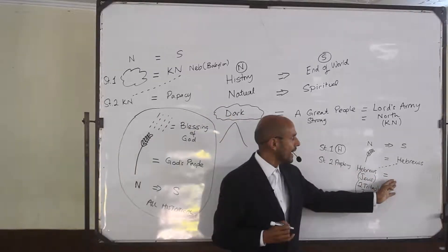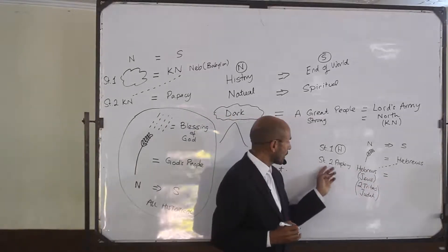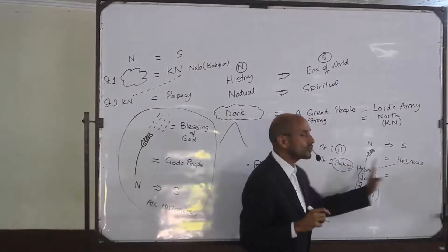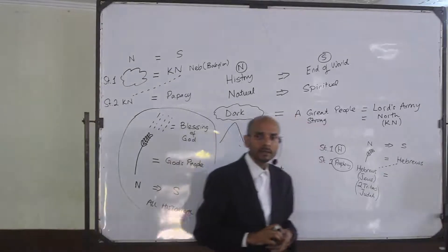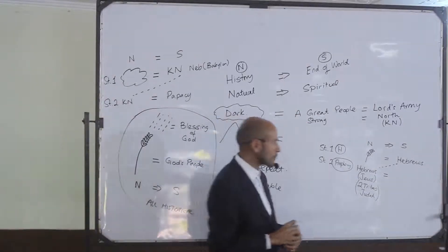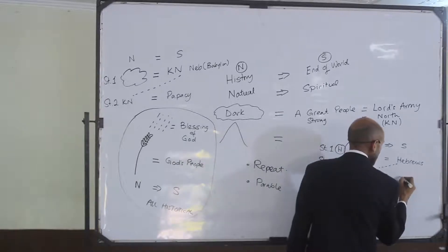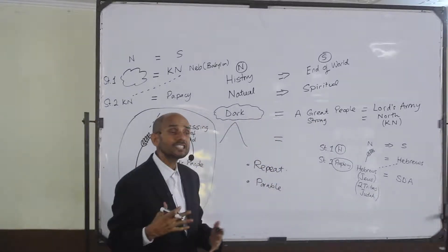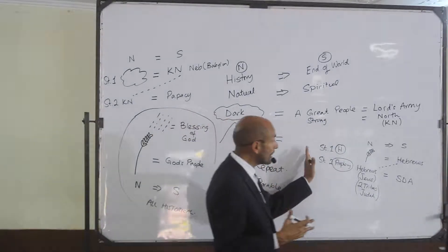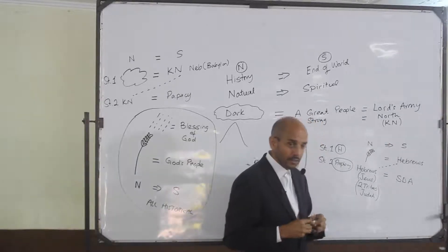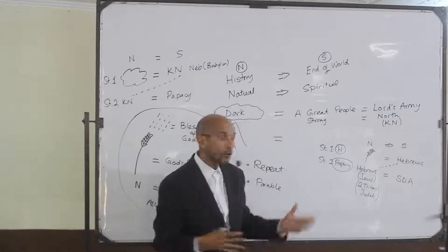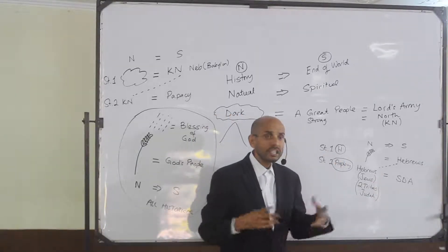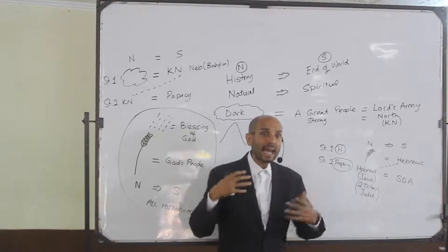Who are these pointing to? Because this is the prophetic model — who are the Hebrews at the end of the world? We'll say Seventh-day Adventists. That's an oversimplification, but hopefully we can see how this is working. Enough of you are responding, which leads me to believe you understand how this is working now.